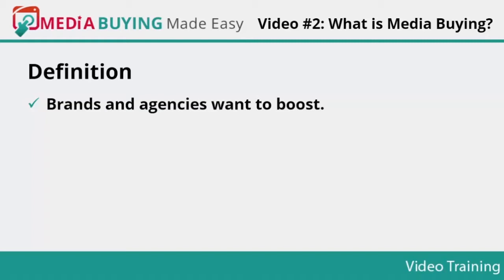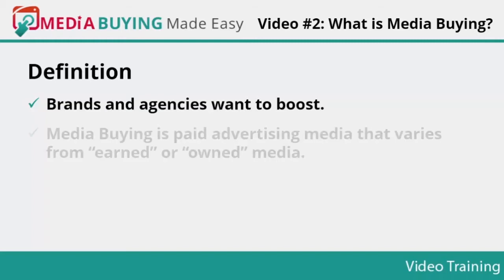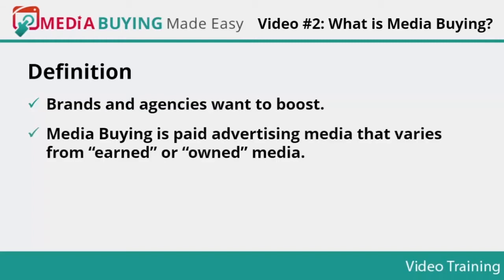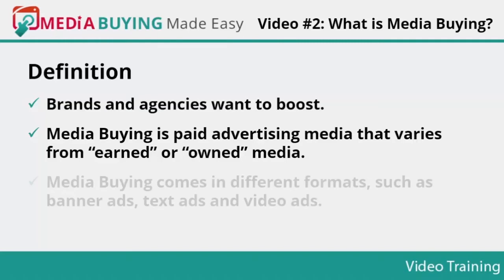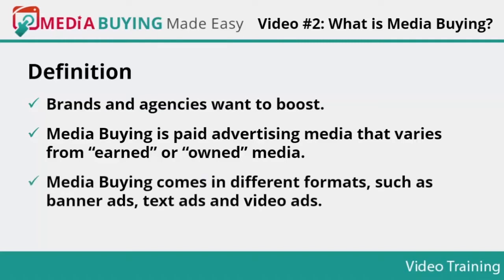Brands and agencies want to boost brand awareness, increase sales, reduce time consumption in buying cycles, and give more time to analyze, learn, and optimize performance. Media buying is paid advertising media that varies from earned or owned media. The very first step in media buying is determining when and where your ads should appear. Media buying comes in different formats such as banner ads, text ads, and video ads. You can buy media from Facebook, MSN, Twitter, and many more places — discover and target the audience you are seeking and choose a time slot for your ad.